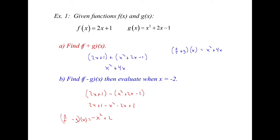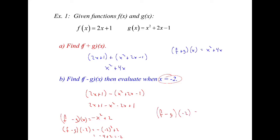On this one, it also wants us to evaluate when x is equal to negative 2. So we can plug that in. f minus g of negative 2 — you make sure you square the negative 2 and then add 2. So that would be negative 4, because negative 2 squared is positive 4, but the negative on the outside plus 2 is equal to negative 2. So f minus g of negative 2 is equal to negative 2.